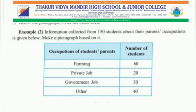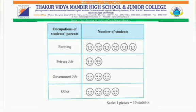So, how can we represent this? One picture for 10 students will be a convenient scale. So, we will draw 6 pictures for 60 students, 2 pictures for 20 students, 3 pictures for 30 students, and 4 for 40 students. For this type of information, a smiley face will be appropriate. Our pictograph will look like this. The scale is: one picture equals 10 students. So farming shows 6 smileys, private job uses 2 smileys, government job uses 3 smileys, and other uses 4 smileys.